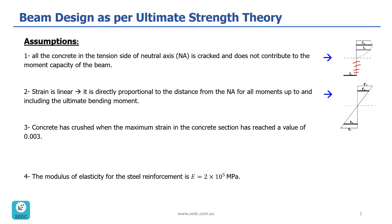The second assumption is that the strain diagram is linear, like what is shown here. So the strain is directly proportional to the distance from the neutral axis for all moments up to and including the ultimate bending moment. As you can see, strain increases further away from the neutral axis.